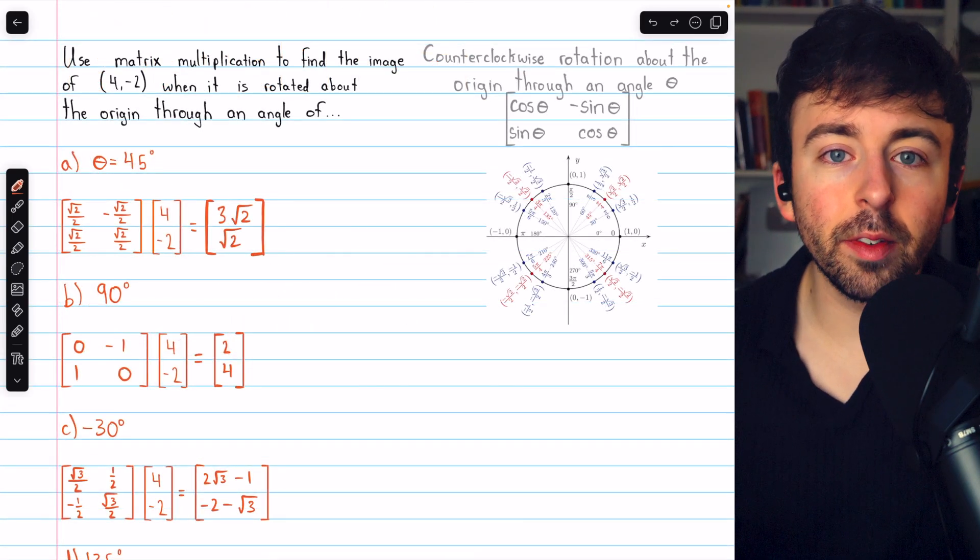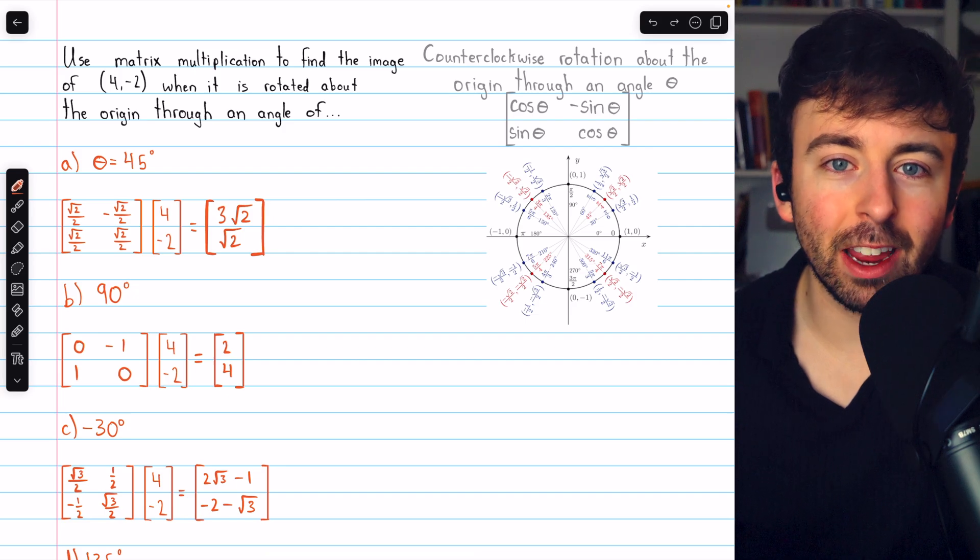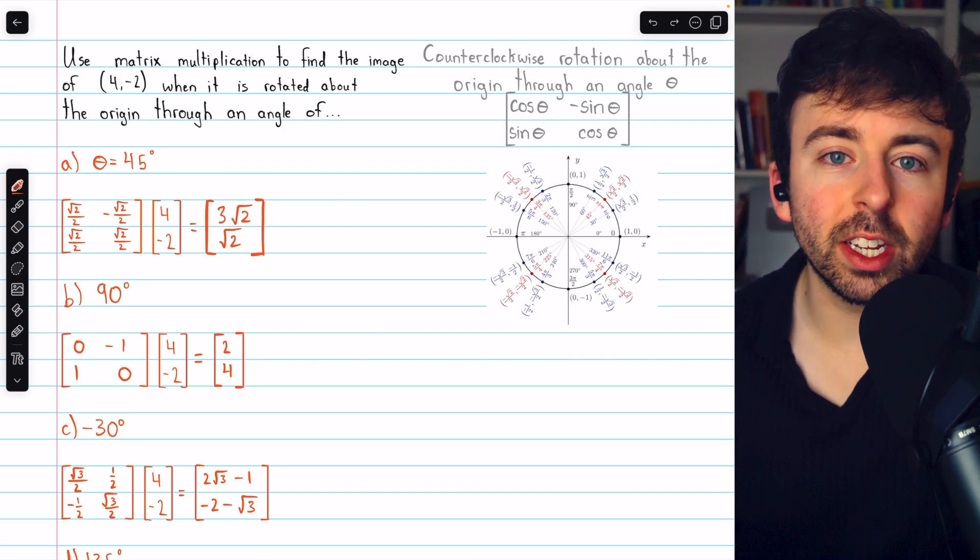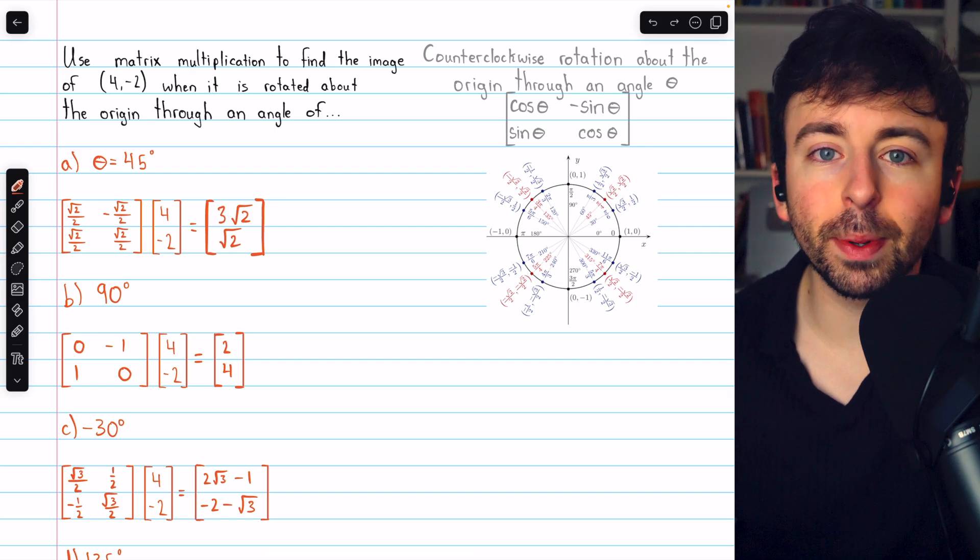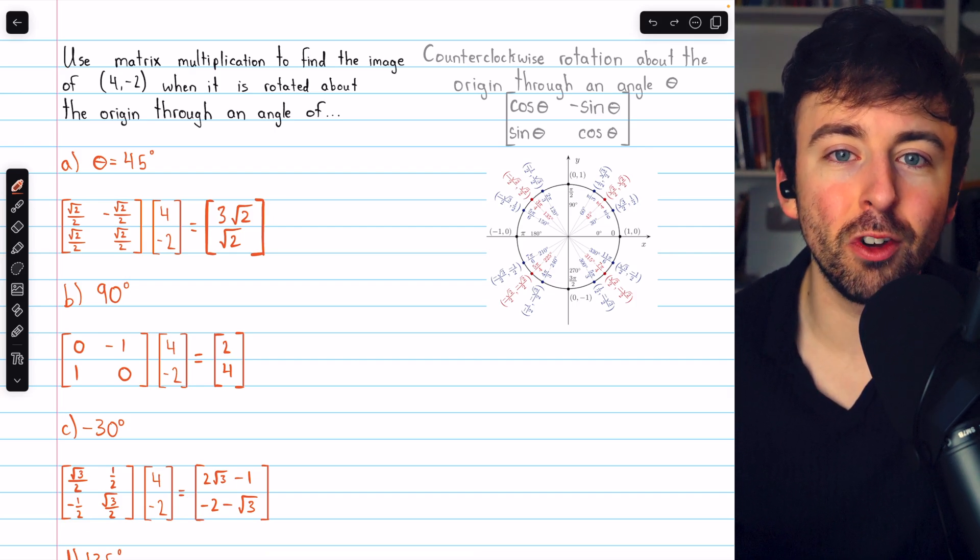Those are a few examples of carrying out rotations in R² using matrix multiplication. Let me know in the comments if you have any questions, and be sure to check out my linear algebra course and linear algebra exercises playlists in the description for more. We'll talk about rotations in R³ later. Those are quite a bit more complicated.